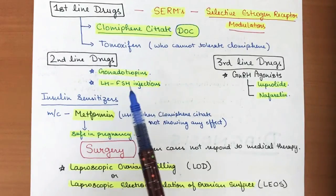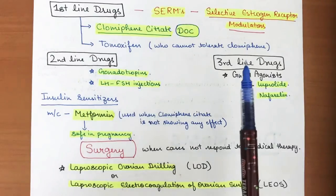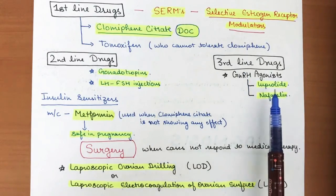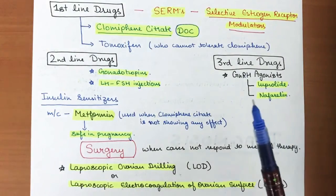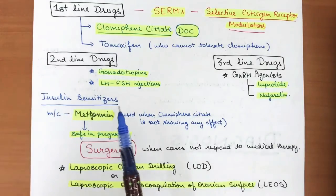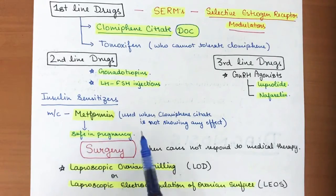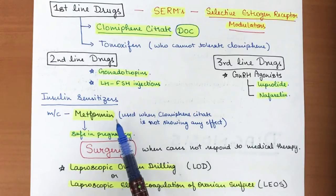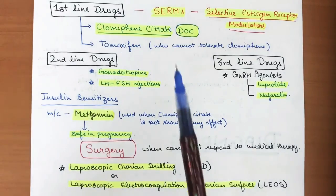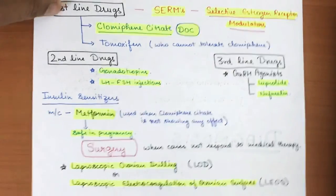Second-line drugs are gonadotropins — LH and FSH injections — to maintain androgen and FSH levels in the body. Third-line drugs are GnRH agonists such as leuprolide and nafarelin. Insulin sensitizers such as metformin are also used; metformin is the most common, is safe in pregnancy, and is given when clomiphene citrate is not showing effect. It also helps in reducing weight.